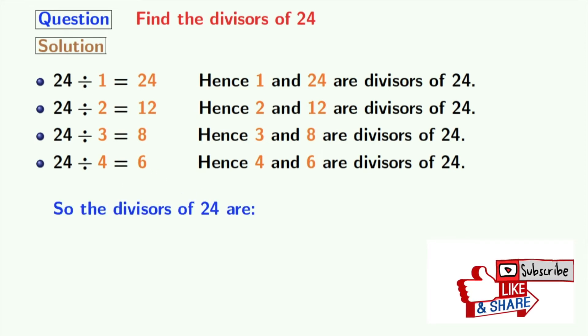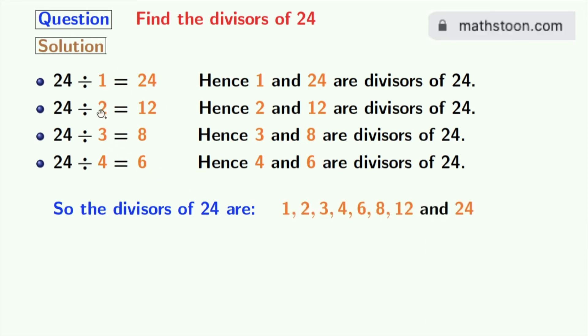So, we have all the divisors of 24 which are in orange colors. These are 1, 2, 3, 4, 6, 8, 12 and 24.